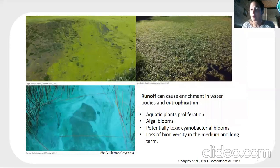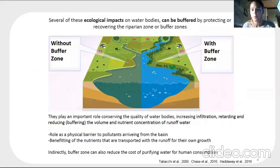This process — the runoff — promotes the export of nutrients to water bodies, which can cause enrichment in the water and eutrophication with all the associated impacts. Several of these impacts on water bodies can be buffered by protecting or recovering the riparian zones, also called buffer zones.